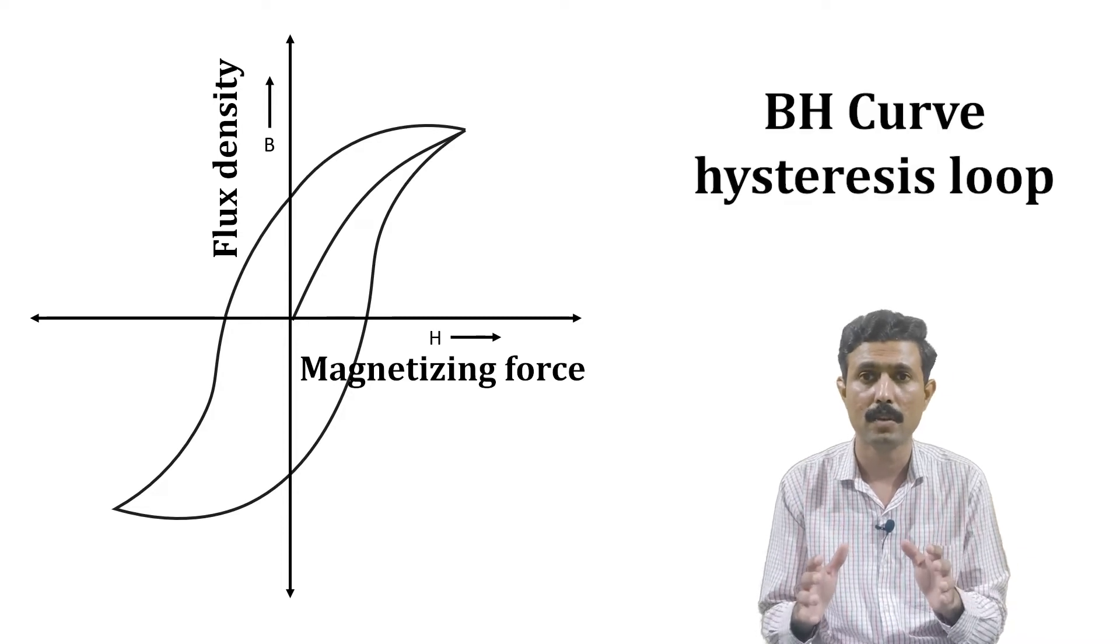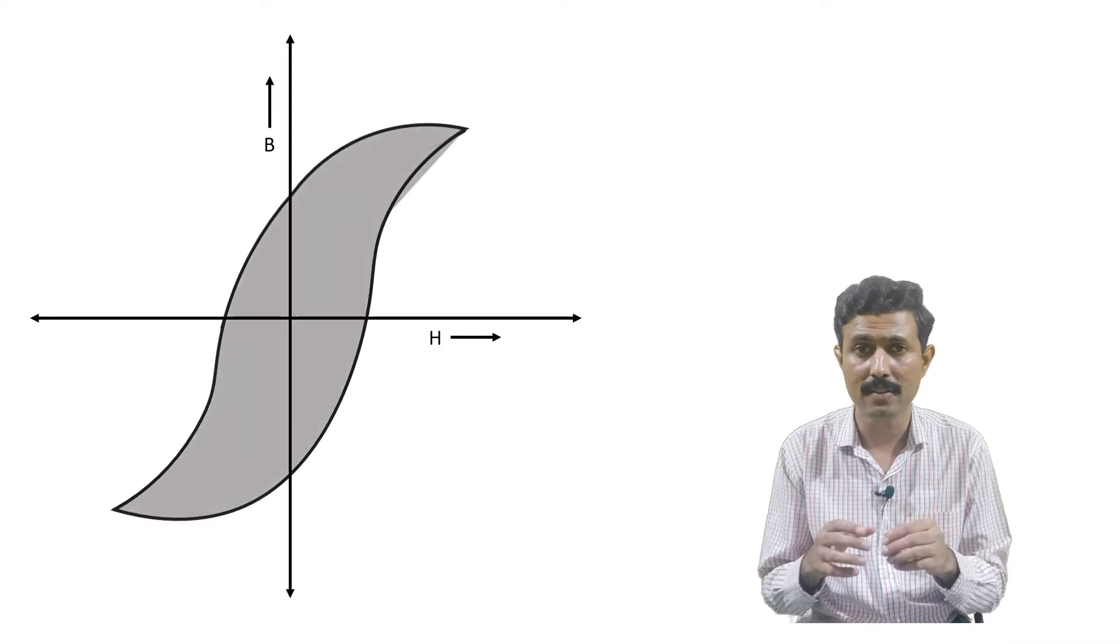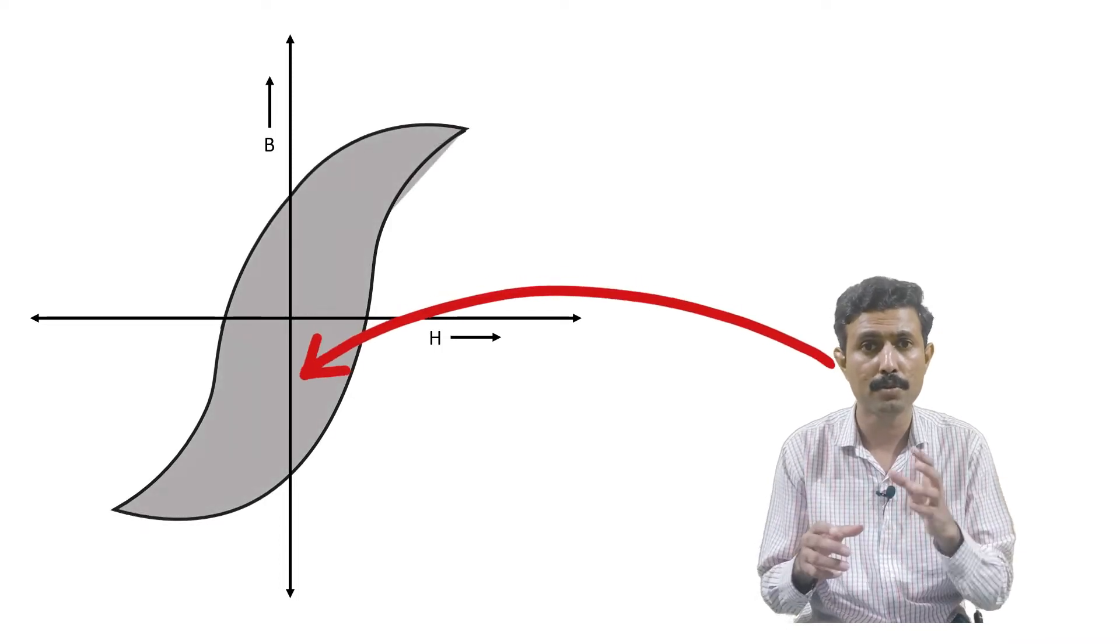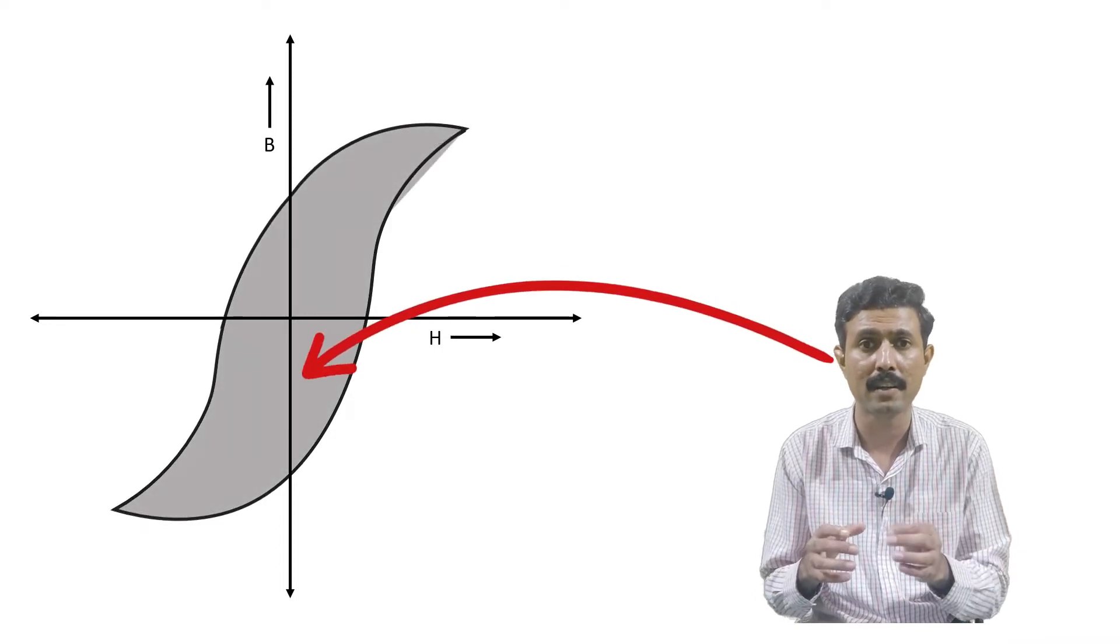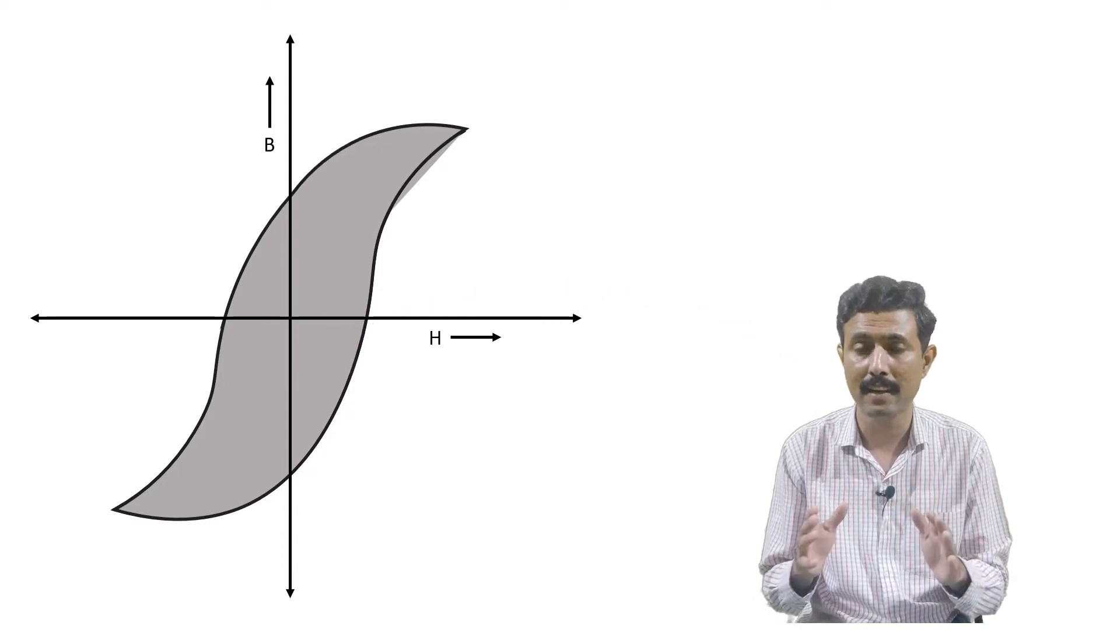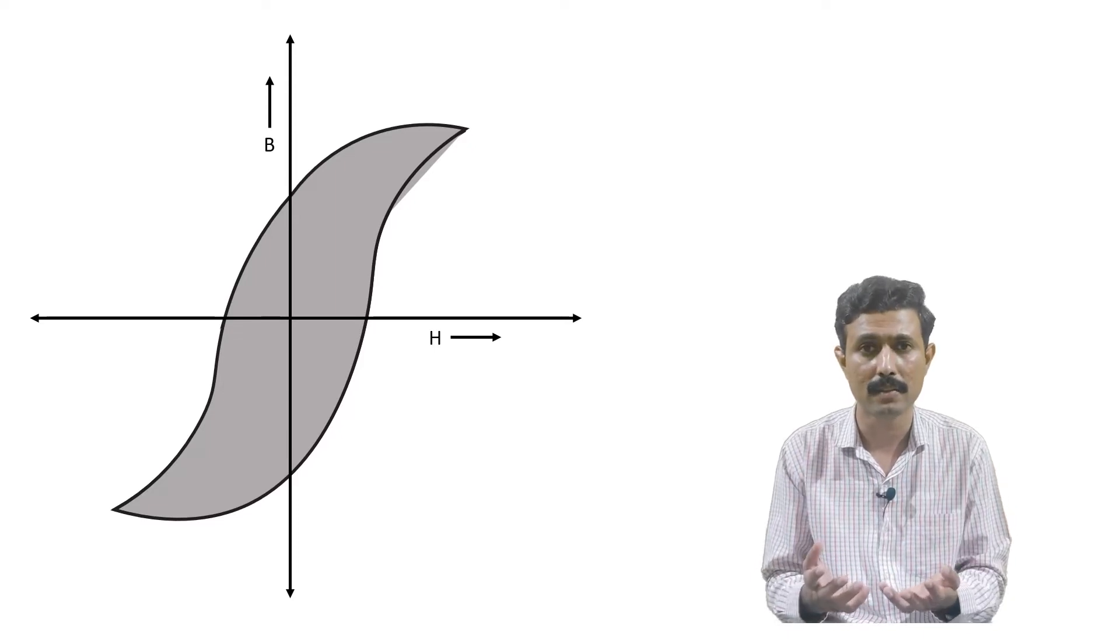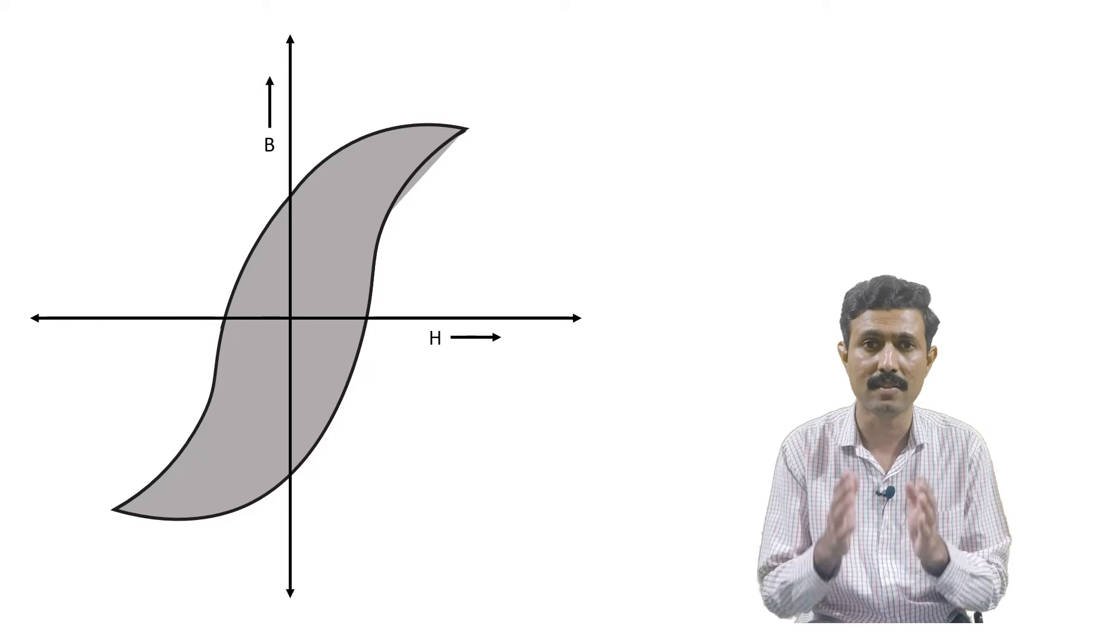So here the area under the hysteresis loop or the BH curve shows the amount of energy that is required to magnetize and demagnetize the material, which is not resulting in any fruitful work but ultimately that energy is being wasted. And that is known as the hysteresis loss.